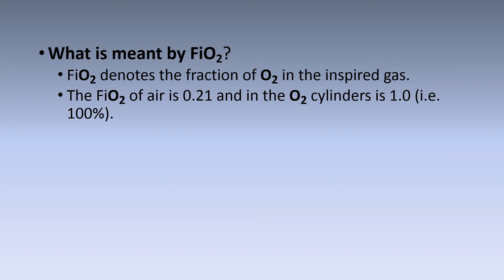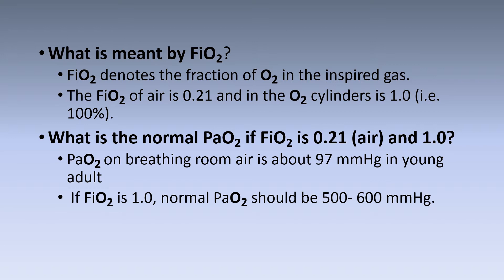What is meant by FiO2? FiO2 denotes the fraction of oxygen in the inspired gas. FiO2 of air is 21% and in the oxygen cylinder is 100%. PaO2 on breathing room air is about 97 mmHg in young adults. If FiO2 is 100%, normal PaO2 should be between 500 to 600 mmHg.